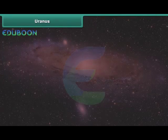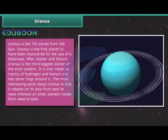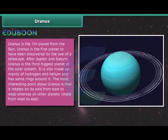Uranus. Uranus is the seventh planet from the Sun. Uranus is the first planet to have been discovered by the use of a telescope. After Jupiter and Saturn, Uranus is the third biggest planet of the solar system. It is also made up mainly of hydrogen and helium and has some rings around it. The most interesting point about Uranus is that it rotates on its axis from east to west whereas all other planets rotate from west to east.